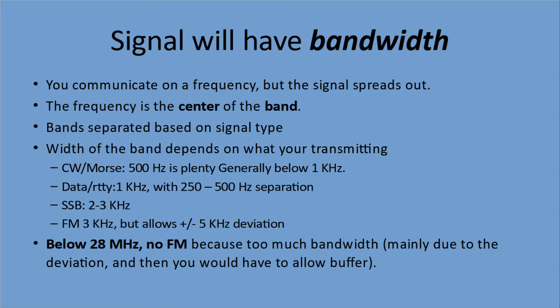Single sideband, which is a form of AM amplitude modulation, needs two to three kilohertz. FM — frequency modulation — needs three kilohertz, and that's the audio generally used on frequencies above 30 megahertz in the VHF and UHF bands that people with only the basic qualification are allowed to use. It's three kilohertz, but you need to allow for five kilohertz of deviation on each side, because FM by its very nature changes the frequency — that's how it puts the sound on the signal. Below 28 megahertz in the HF bands, no FM is used because it requires too much bandwidth, mainly because of the deviation and how much you would have to buffer.